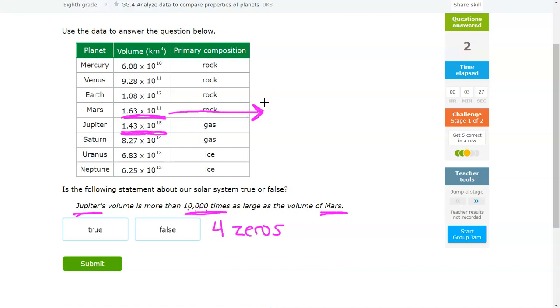we're going to have to increase the value of Mars by 10,000. So the easiest way to do that is that since there's 4 zeros and it's 10 to 11, we're going to increase the exponent on the volume of Mars by 4. So instead of 1.63 times 10 to the 11th, it'll be 1.63 times 10 to the 15th. So if Jupiter is more than 10,000 times larger,